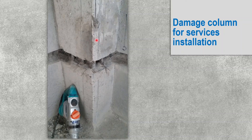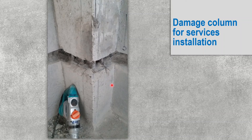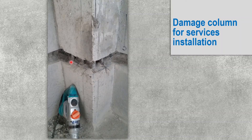In this figure, a column has been damaged to run services. The services needed to go in a different direction, so concrete was removed from the column — this is unacceptable. This is due to poor inspection and poor approval process; it should have been done under the supervision of a structural or civil engineer. These situations can lead to structural failure, especially in critically loaded columns, and must be avoided.